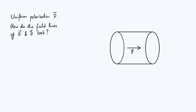Let's note down some potentially useful equations. A good place to start is the definition of the displacement field: D = ε₀E + P, where P is the polarization vector. If we're trying to sketch field lines we also need to know about the divergence and the curl of D.